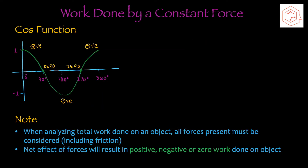To visualize this concept, let's analyze the cosine function. Positive work is done when the angle theta is between 0 and 90 degrees, or between 270 and 360 degrees. Cos 180 equals negative 1, so anything between 90 and 270 degrees gives negative work. If theta is exactly 90 or 270 degrees, zero work is done. Additionally, when analyzing the total work done on an object, all forces must be considered, including friction, and the net result will be positive, negative, or zero.